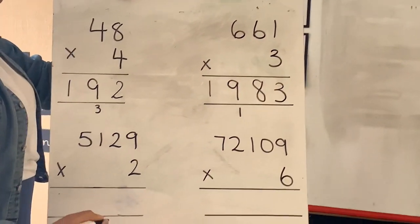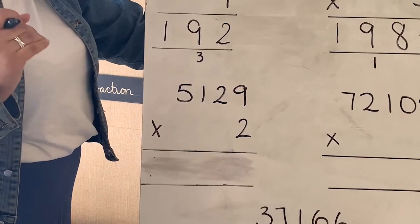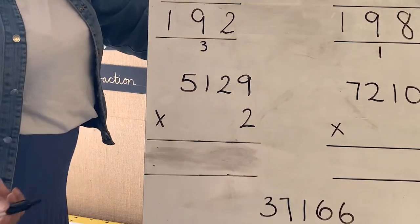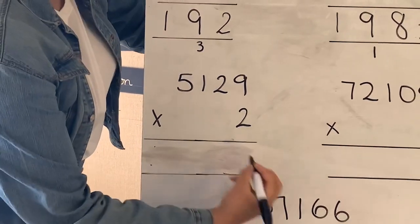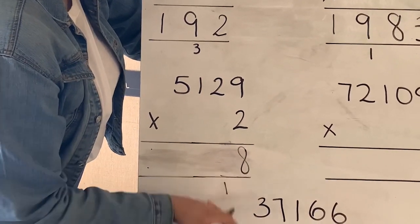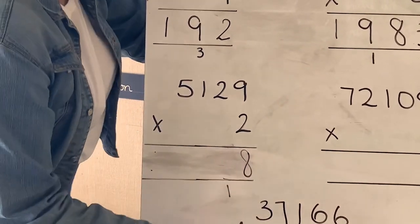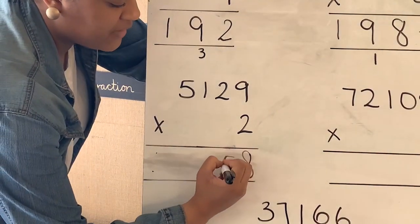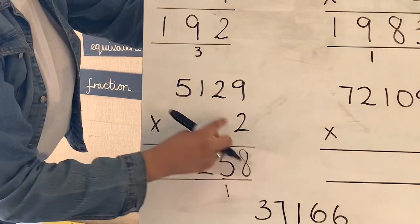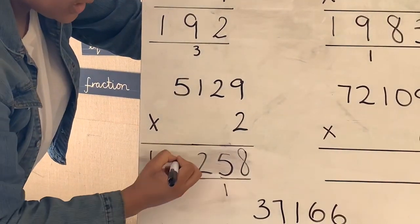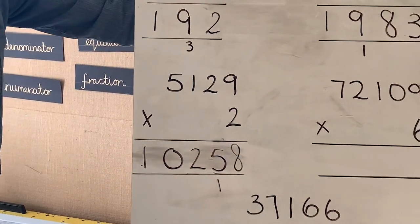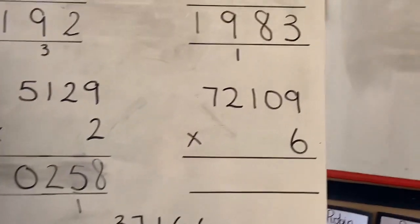Moving on to our third calculation, 5129 times 2. Starting off in our ones, 2 times 9 which is 18, put the 8 down, exchange the 1 into our next column. 2 times 2 which is 4, adding our exchanged 1 which equals 5. 2 times 1 which equals 2, and then 2 times 5 which equals 10. Again making sure I'm putting them in the right column, and our answer is 10,258.